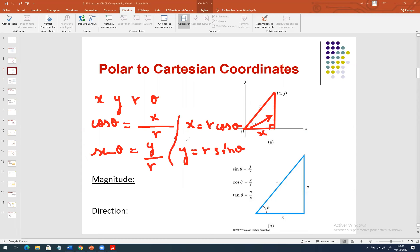Here, we have the relation between the Cartesian coordinates, x and y, and the polar coordinates, r and theta.